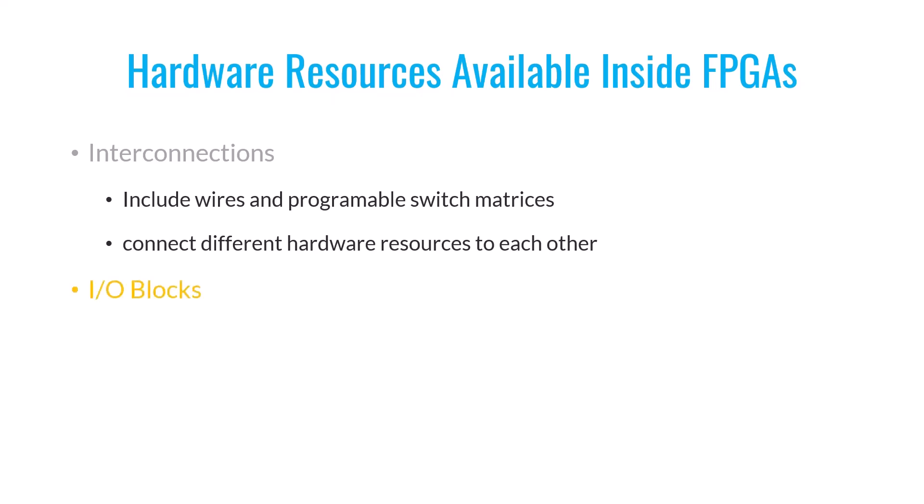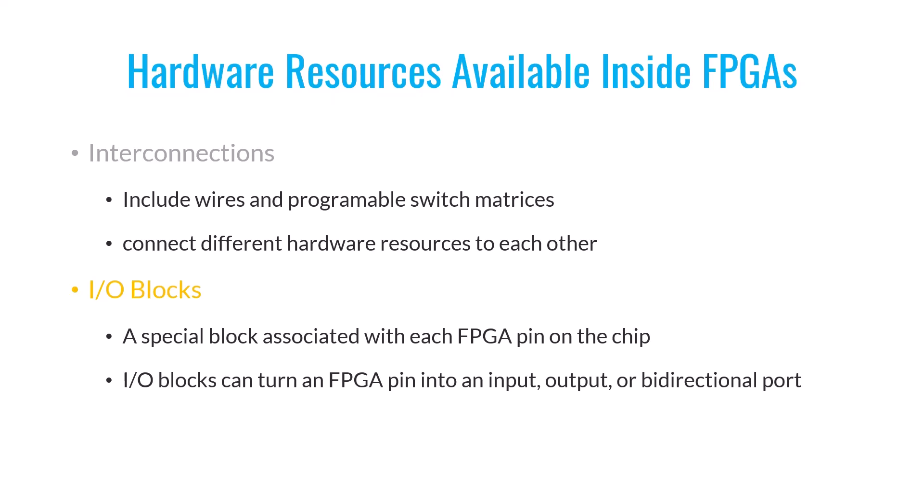The next resource to consider is IO blocks. These are circuits behind each of the FPGA's pins, and these circuits are programmable too. With IO blocks, we have the power to decide whether each FPGA pin should act as an input, an output, or both — also known as bi-directional pins. You can also specify various IO standards for these pins. For example, you can define the current drive strength for output pins or set voltage levels for input and output pins. This capability allows for diverse connections between the FPGA and various peripherals.